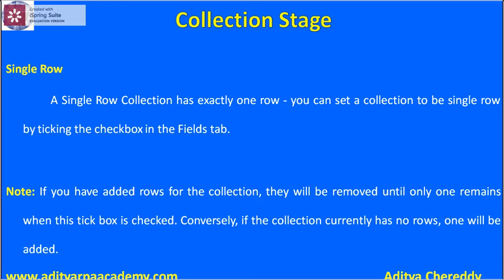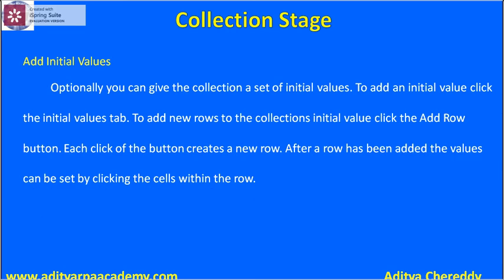The single row option — if you select it, the collection will have exactly one row. You can set a collection to single row by ticking the checkbox in the fields tab. If you have added multiple rows to the collection, they will be removed until only one remains when this checkbox is checked.